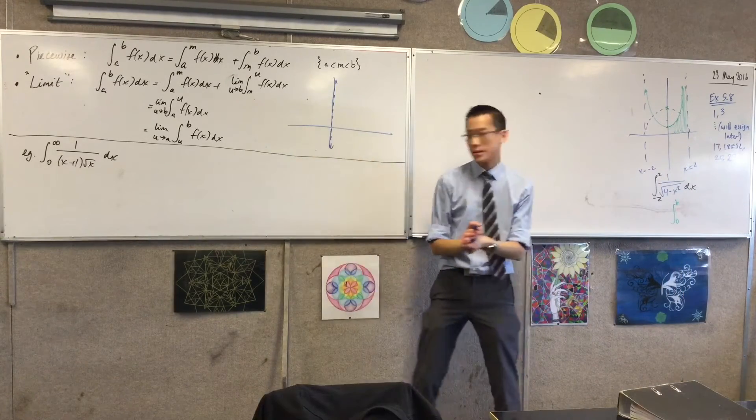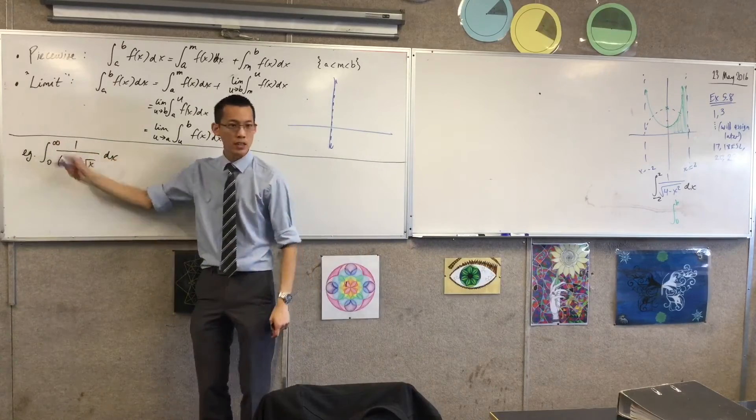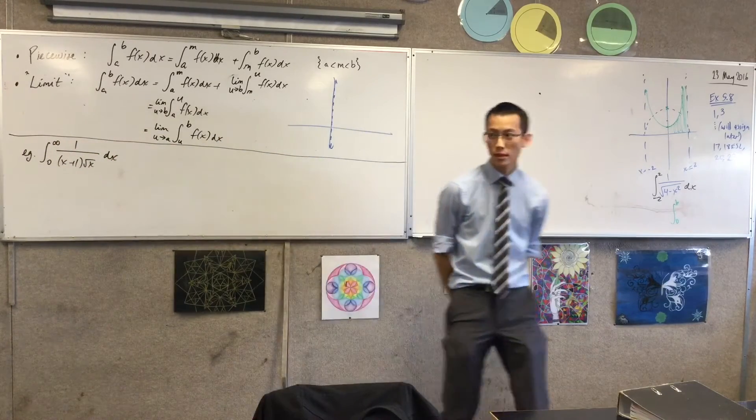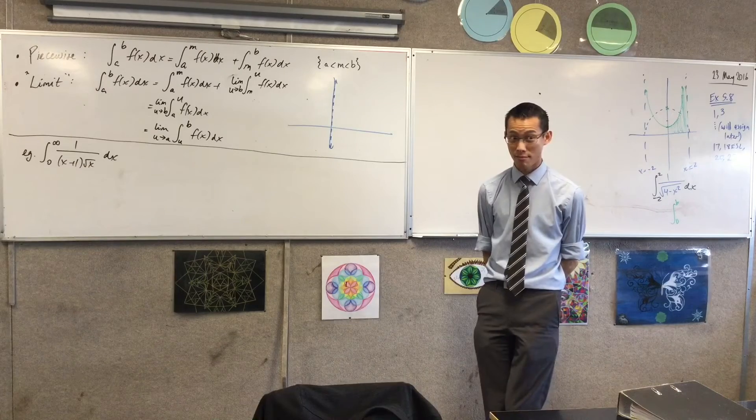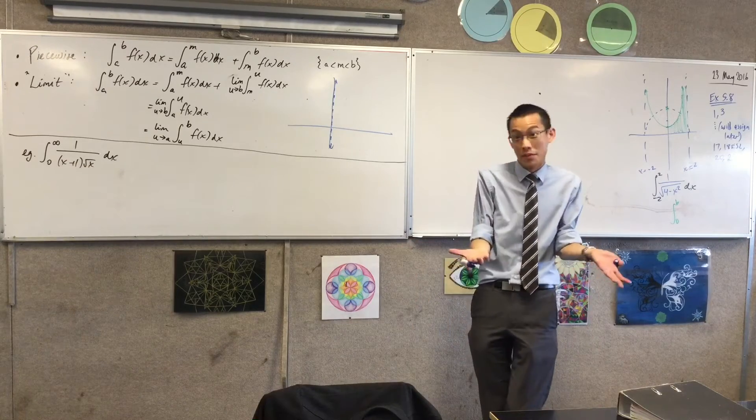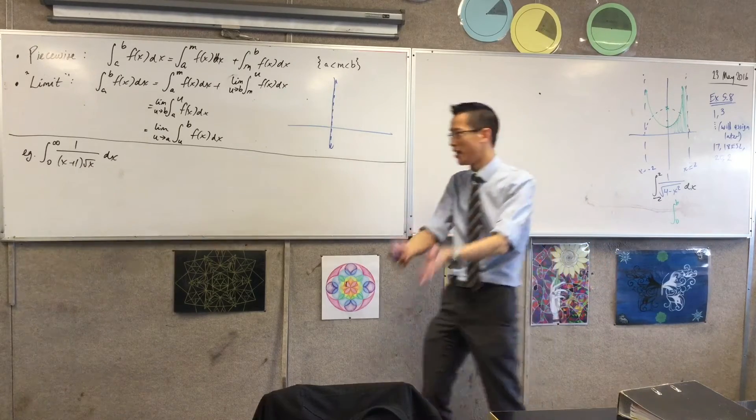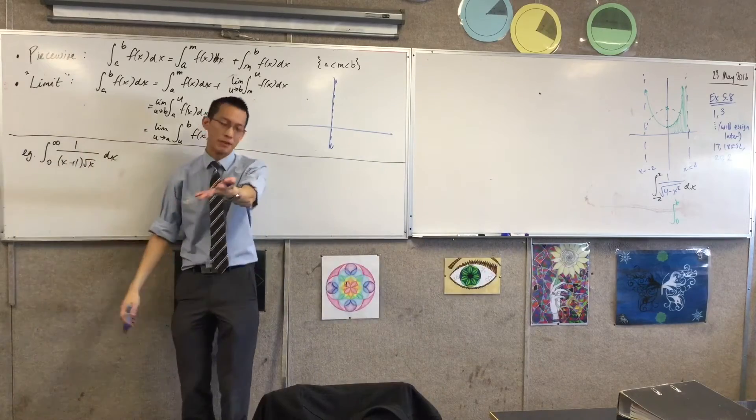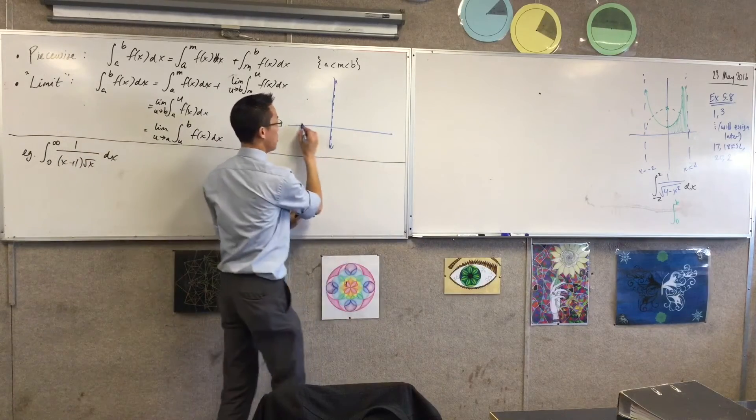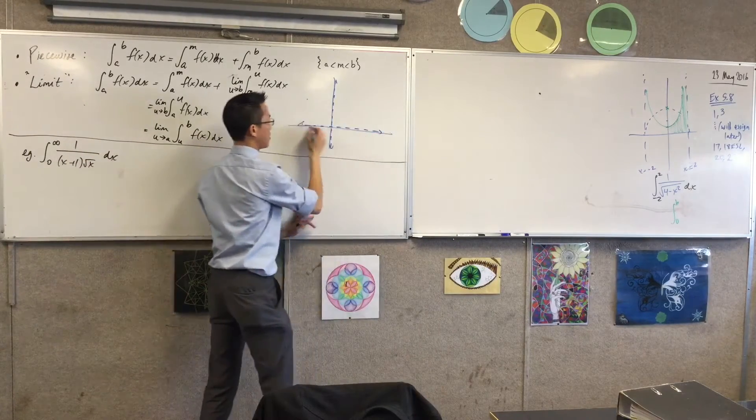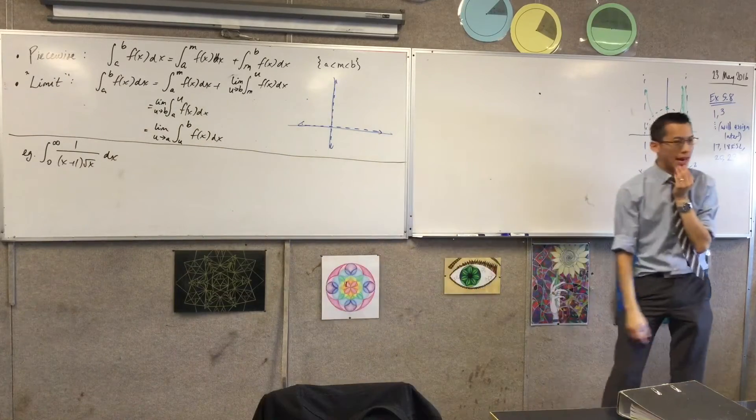So I've told you about what happens as x approaches 0. Now what happens as x approaches infinity? What's happening to the denominator? It's becoming really, really small. The denominator is just going to infinity. So therefore, the whole function is getting really, really small.